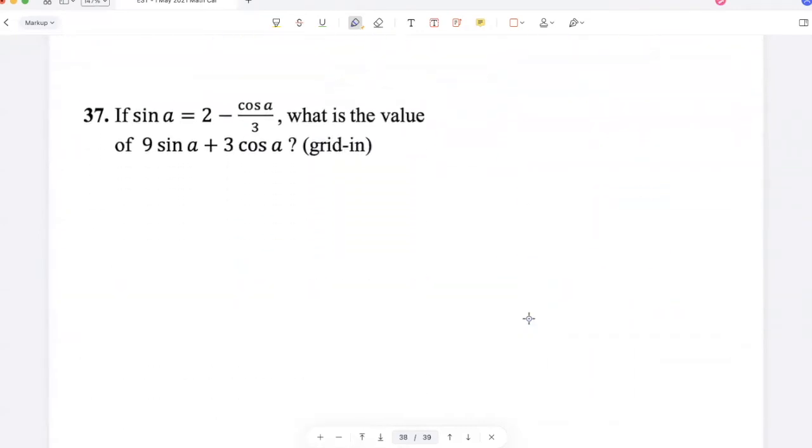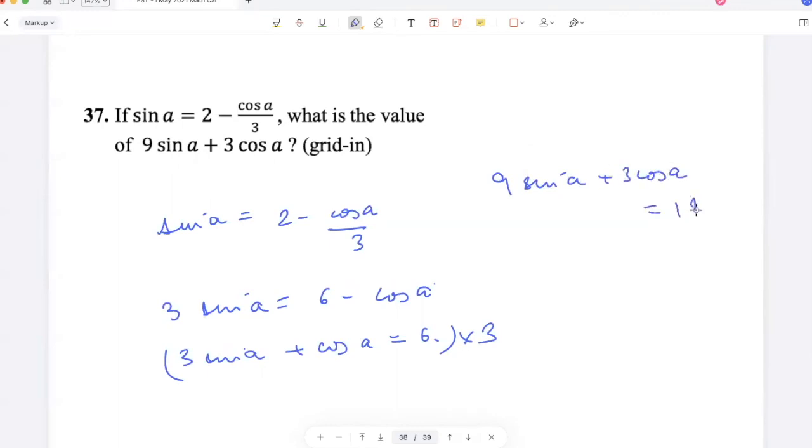If sin A is 2 minus cos A by 3, what is the value of 9 sin A plus 3 cos A? sin A is 2 minus cos A by 3, so 3 sin A is 6 minus cos A. So 3 sin A plus cos A is 6. If I multiply this equation by 3, 9 sin A plus 3 cos A is 18. So that's my answer.